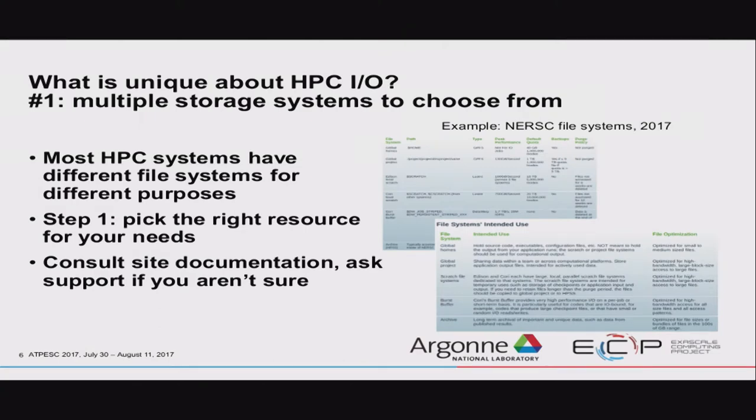The first is that on any of the computing systems we're going to talk about, you have a lot of file systems to choose from — there's not just one. I've got a chart from the NERSC website as an example; they have six file systems with different characteristics and capabilities. The first thing you want to do is make sure you're reading and writing your data from the place that makes the most sense. If you're not sure, ask your support people at the site — bad things happen when you're not on the right storage system.